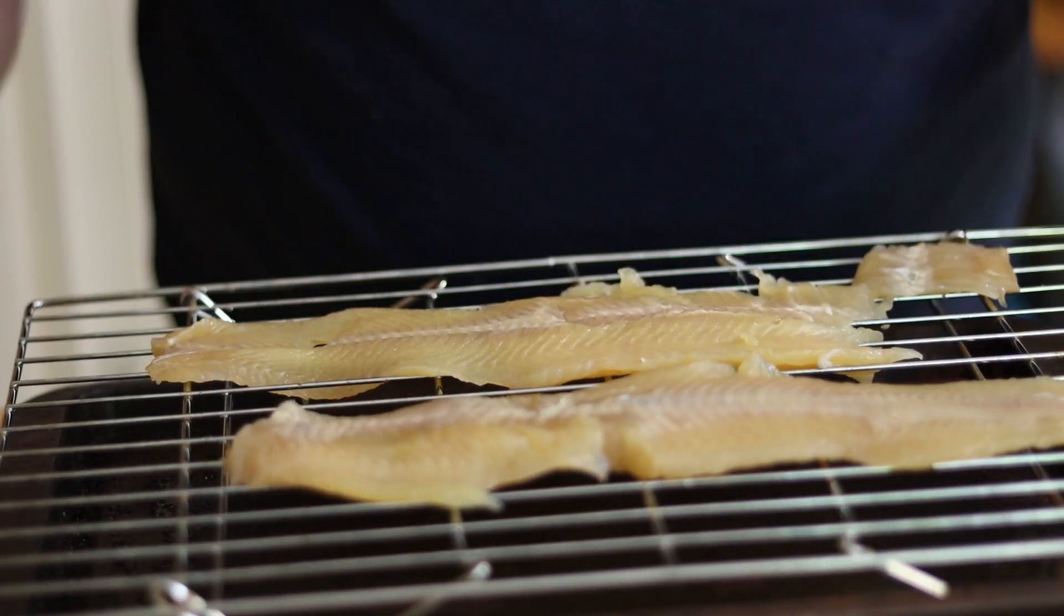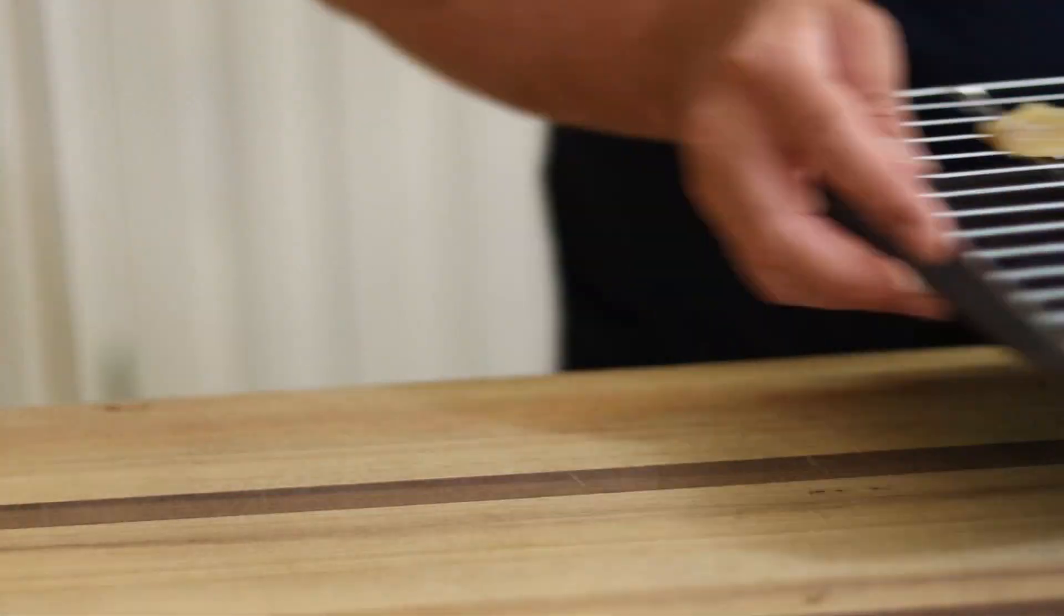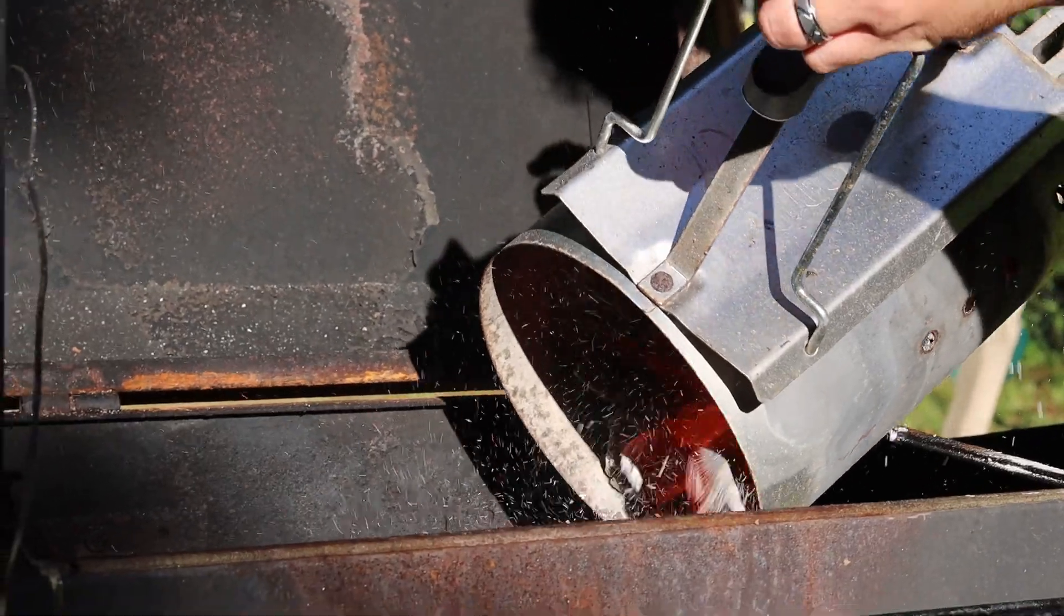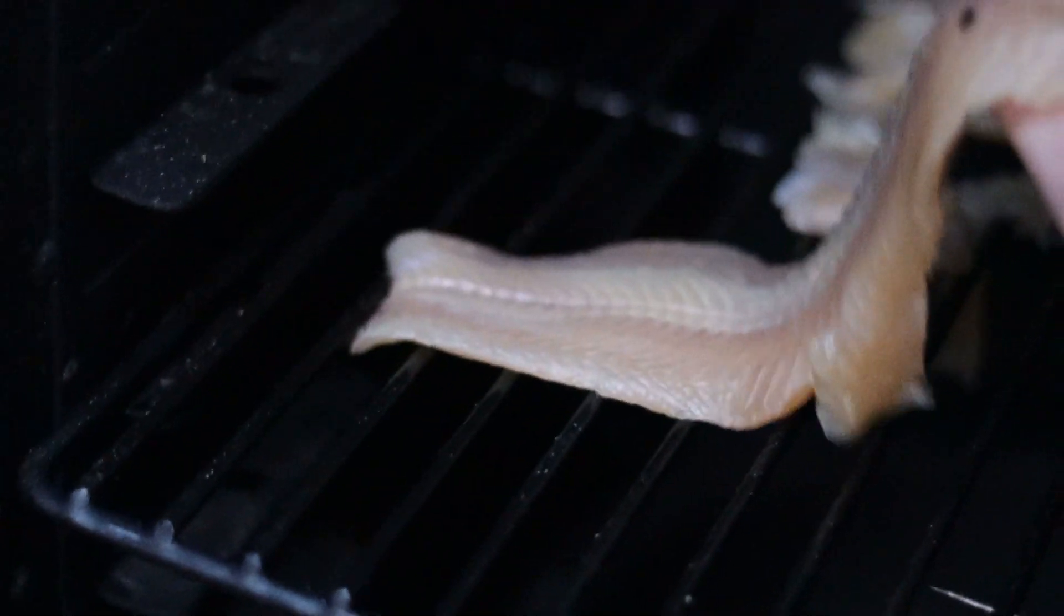Before returning it uncovered on a wire rack to air dry in the fridge. Now we get to play with some fire and bring our smoker up to around 180 degrees Fahrenheit. In goes our trout.